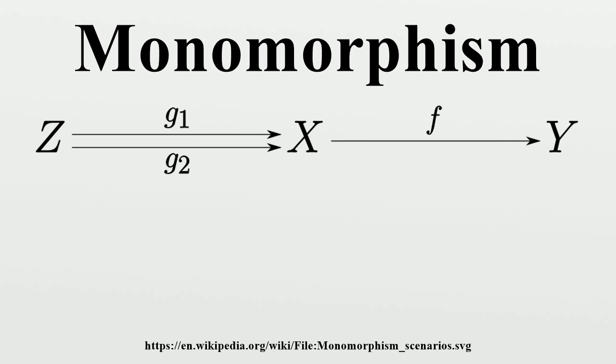To go from that implication to the fact that Q is a monomorphism, assume that Q∘f = Q∘g for some morphisms f, g: G to Q, where G is some divisible group. Then Q∘(f - g) = 0, where f - g is defined pointwise. From the implication just proved, Q∘(f - g) = 0 implies f - g = 0, so f = g. Hence Q is a monomorphism, as claimed.